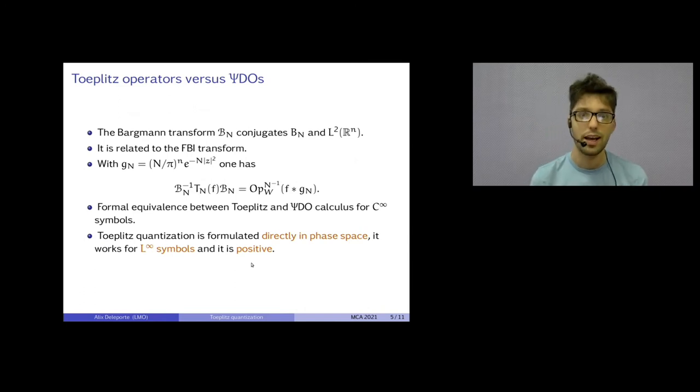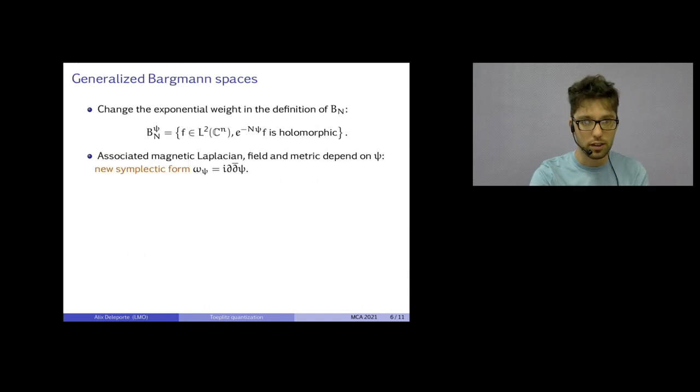And a consequence of the fact that it works for C^∞ symbols is that it's positive. Whenever f is positive, Tn of f is positive. And that's a much, much simpler statement than Gårding estimates. You have sharper estimates. You have an equivalent of Fefferman-Phong or Melin estimates. But you can prove them in Toeplitz quantization also. But already at this stage, there are some advantages to Toeplitz quantization.